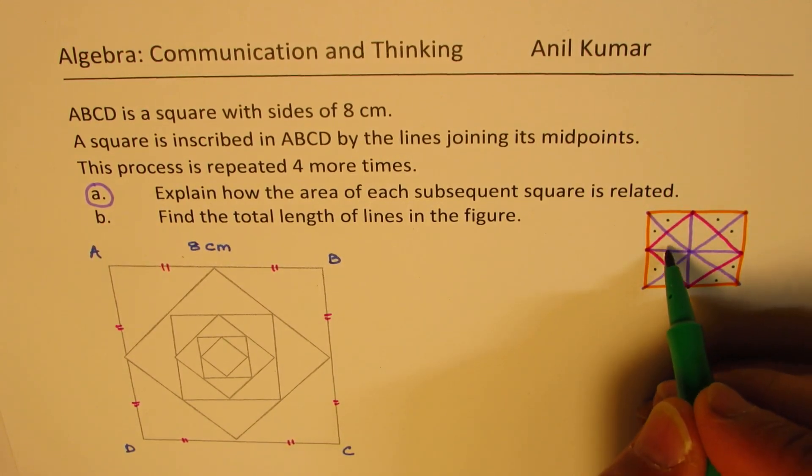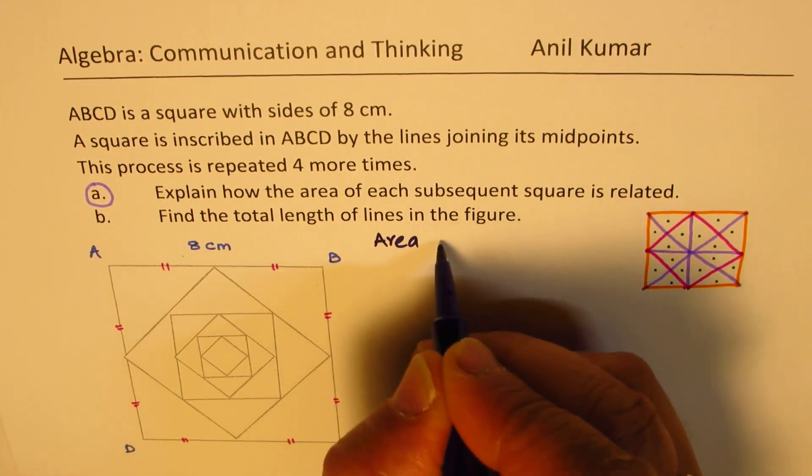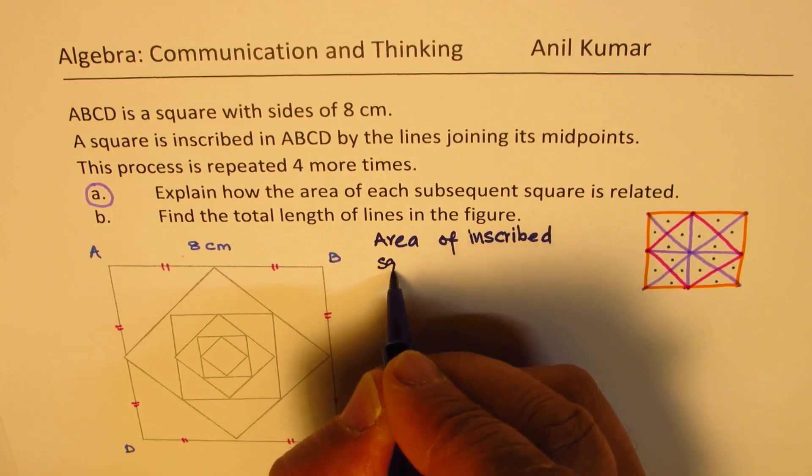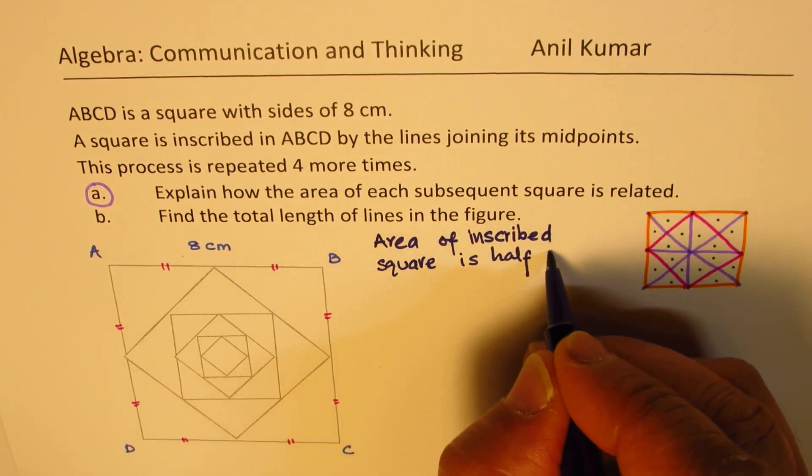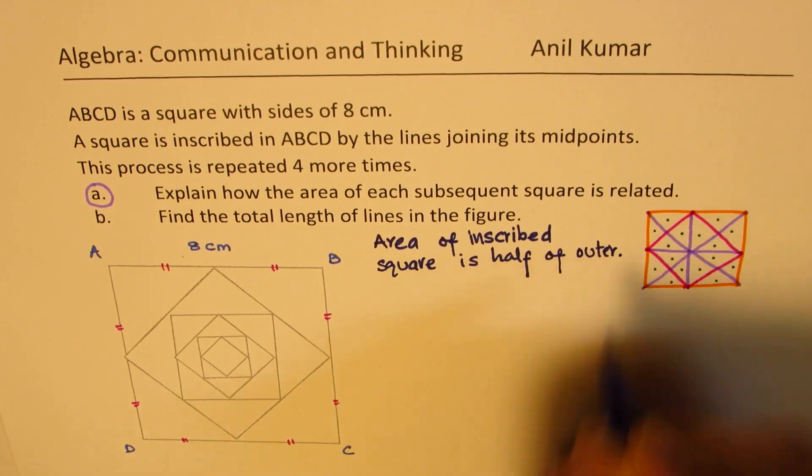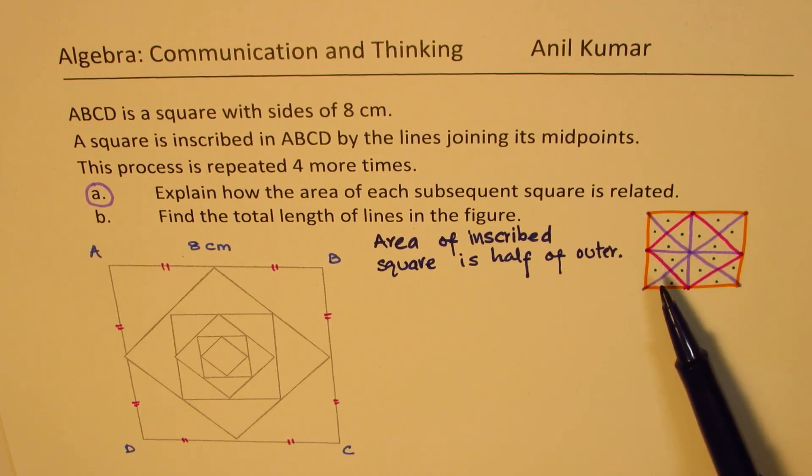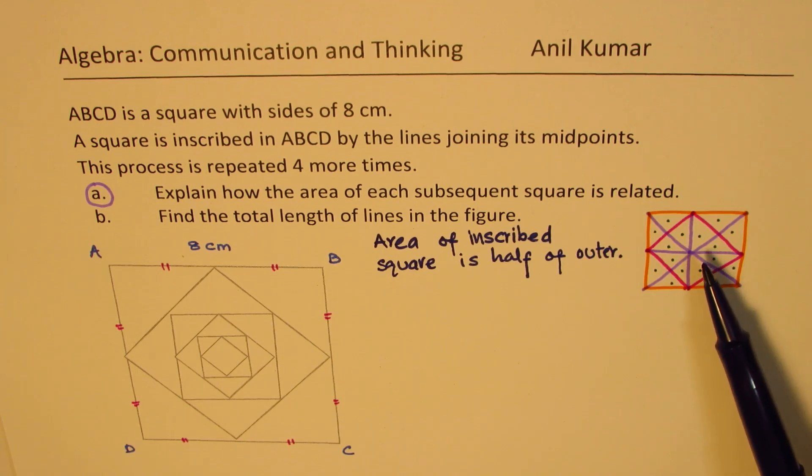And inside this we have 1, 2, 3, 4, 5, 6, 7, 8. Do you see that part? That means that the area of inscribed square is how much? Is half of outer. Even without doing any calculation, we can count these congruent triangles. There are 16 in all. And in the inscribed square there are 8 of them. So the area is half. Do you see that?